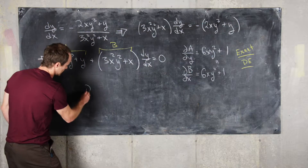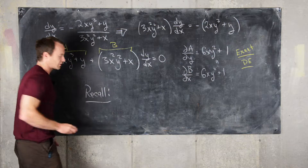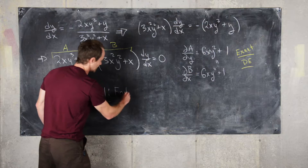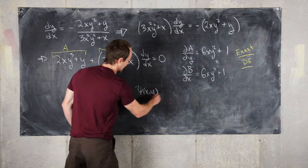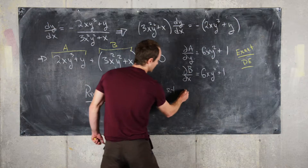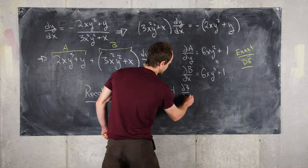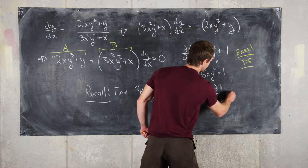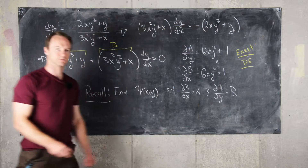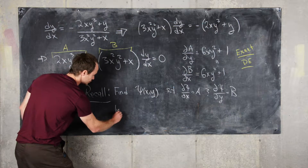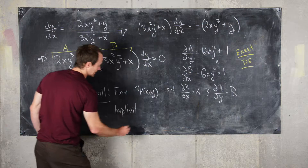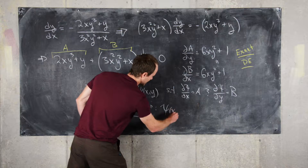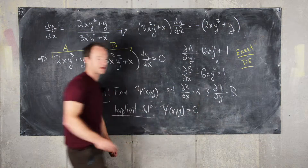The general method for solving an exact differential equation is to find some function of two variables, psi(x, y), such that the partial of psi with respect to x equals a, and the partial of psi with respect to y equals b. The solution is then described implicitly by psi(x, y) equals a constant.